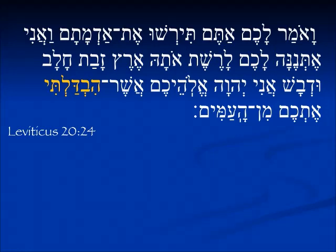So we'll look at some examples from scripture. In Leviticus 20:24, God is talking to the people. He tells them they're going to inherit this land flowing with milk and honey. And he says, 'Ani Yehovah Eloheichem' — I am Yehovah, your God — 'Asher hivdalti etchem min ha'amim,' who separated you from the nations. This is the first person singular. God is saying, I separated you.